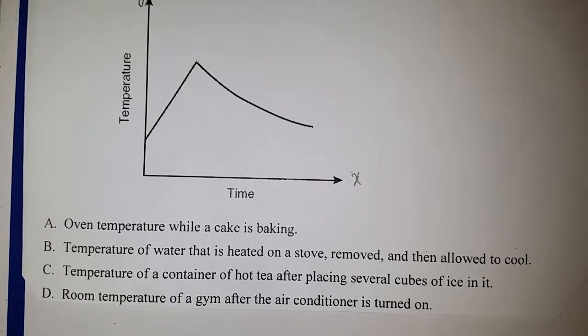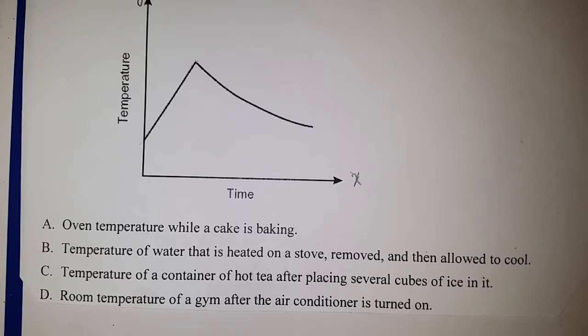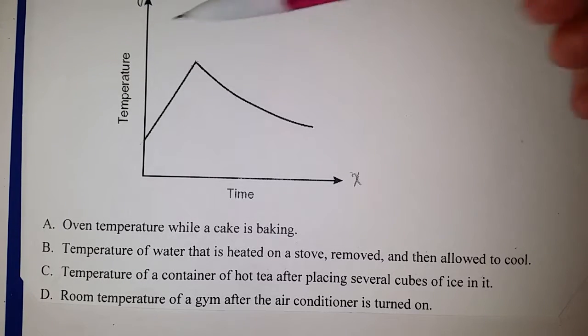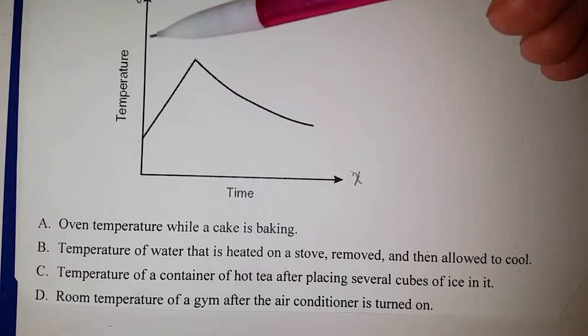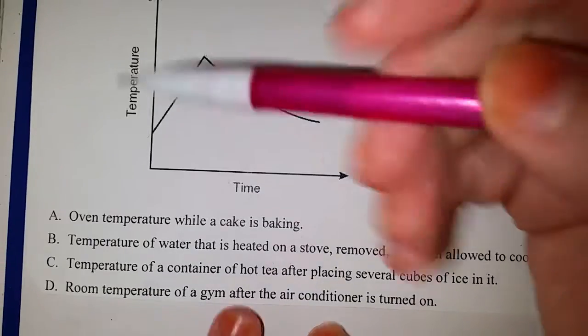So there's no need to increase the temperature first, it's already up there. And then the air conditioning is turned on and the room gradually cools, so the graph would look something like this. So it's definitely not going to be D.